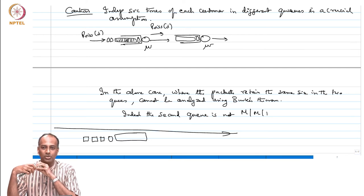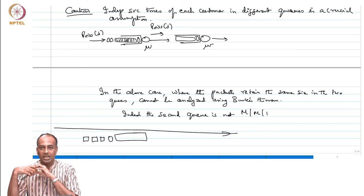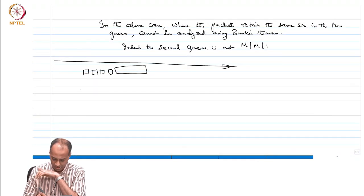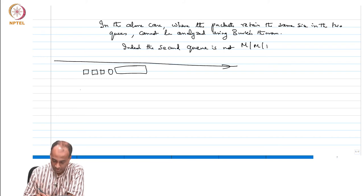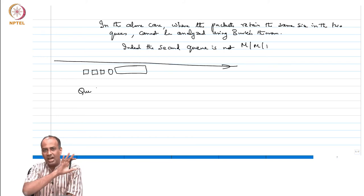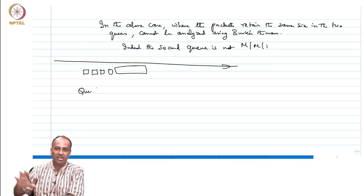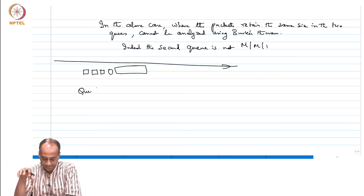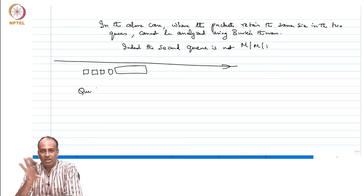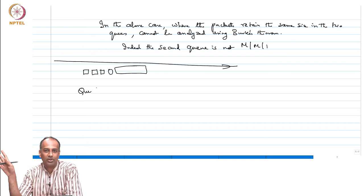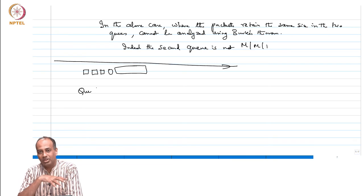Another word of caution is that if you have cycles, this sort of breaks down. If you have tandem queues where one queue's output feeds the other — with independence across service times — you can use Burke's theorem and have independence of state. But the moment you start feeding back, if the output of one queue feeds back into its own input or another queue's input, then you will have trouble.